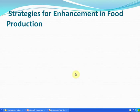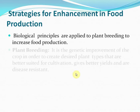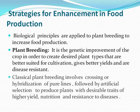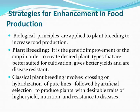Today we are going to talk about the strategies for enhancement in food production. Biological principles are applied to plant breeding to increase food production. Plant breeding is the genetic improvement of the crop in order to create desired plant types that are better suited for cultivation, give better yields, and are disease resistant. Classical plant breeding involves crossing or hybridization of pure lines followed by artificial selection to produce plants with desirable traits of higher yield, nutrition, and resistance to diseases.